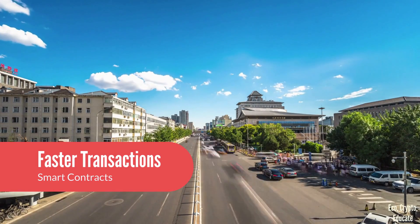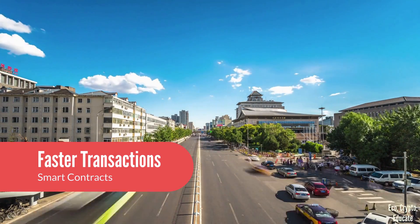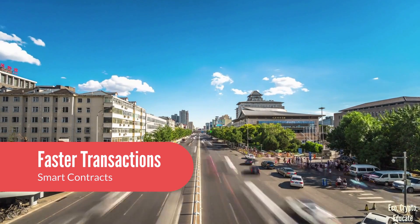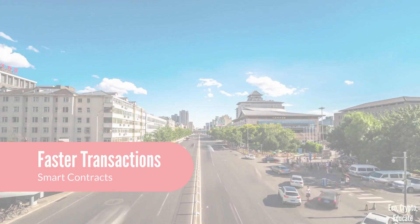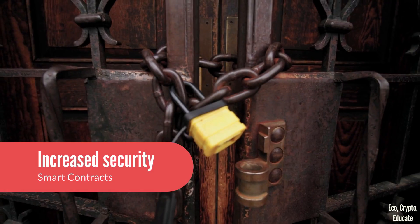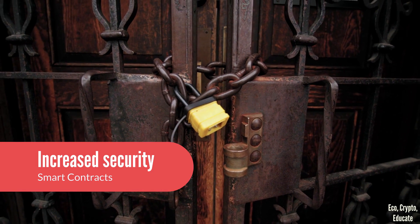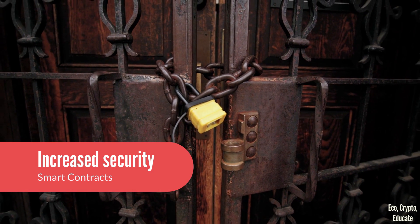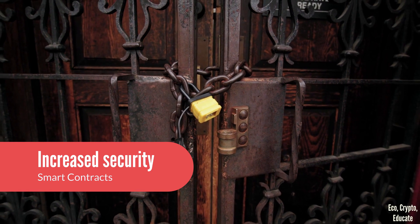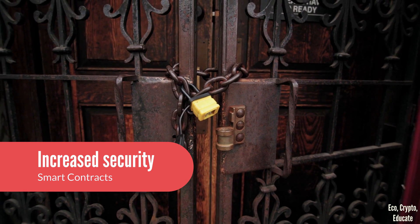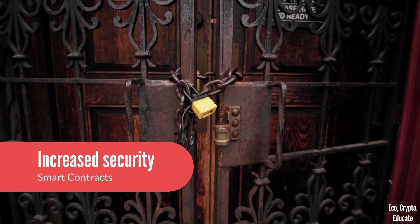Since they are self-executing and automated, smart contracts are faster than traditional manual transactions to execute and complete. They are also secured by cryptographic algorithms and operate on a decentralized network, which makes them less vulnerable to hacking or other types of cyber attacks.